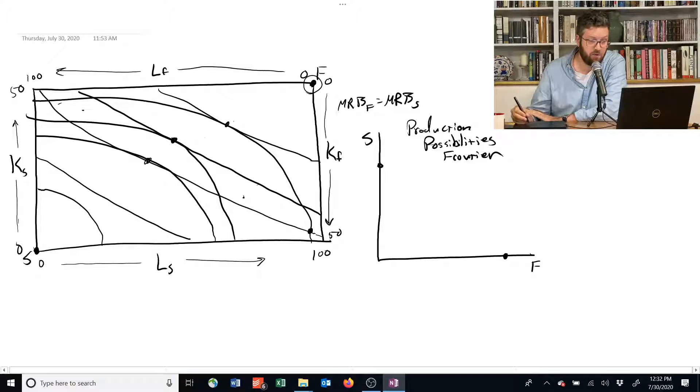This point here is a point where we're producing some food and some shelter. We're allocating most of our resources to the production of shelter in this case, so maybe it's someplace like here. That corresponds to that point.